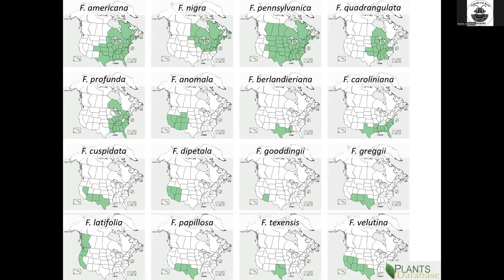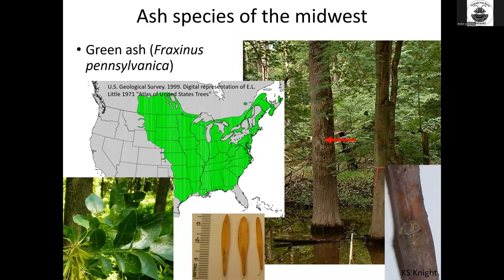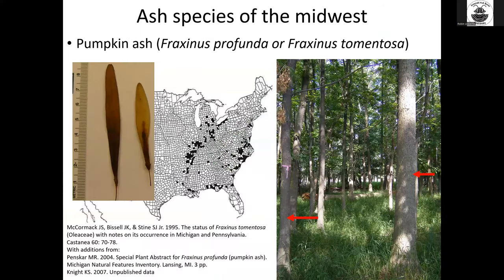Black ash is a more northern ash species with a more northern range. It inhabits wet areas like swamp forests and floodplain forests and is particularly important in northern Minnesota, northern Wisconsin, and some areas of Maine. Green ash is a very widespread species that inhabits floodplains and can be dominant in our floodplain forests, but it has a range of habitats as well. White ash is a more upland hardwood forest species that grows mixed in stands with other hardwood species. Pumpkin ash is a more southern species that inhabits wetter forests, swamps, and floodplains. It looks very similar to green ash, and in Ohio we get mixed stands of pumpkin ash, green ash, and black ash all growing together.